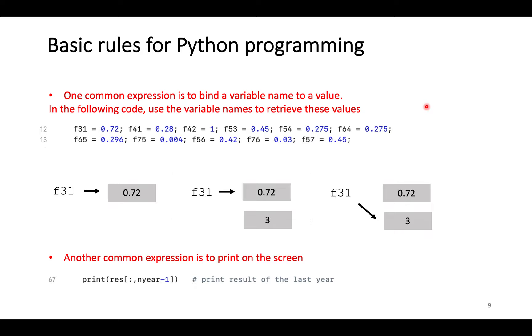One common expression is to bind a variable name to a value. Later, we are able to retrieve values using the variable names. In this case, we can retrieve the value 0.72 by this variable name. It is flexible to re-bind the variable name to another value. Like here, this variable name is now re-bound with a value of 3.